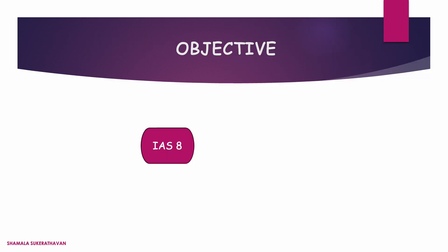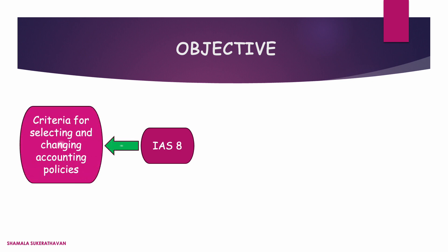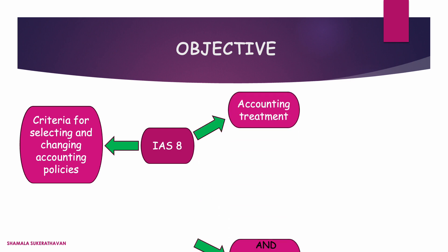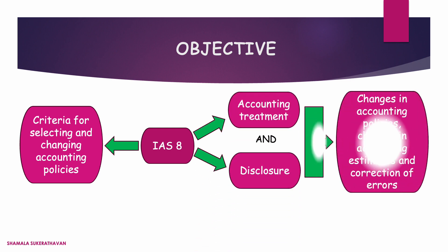The objective of IAS 8 is to prescribe the criteria for selecting and changing accounting policies, as well as the accounting treatment and disclosure of changes in accounting policies, changes in accounting estimates and correction of errors.